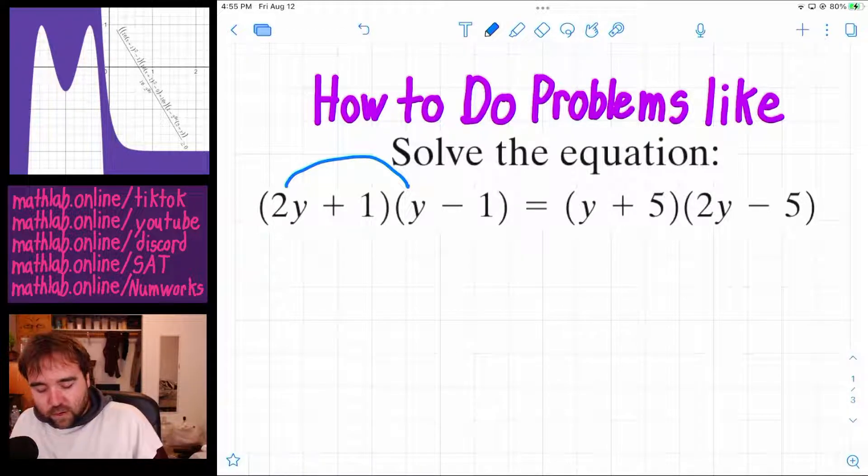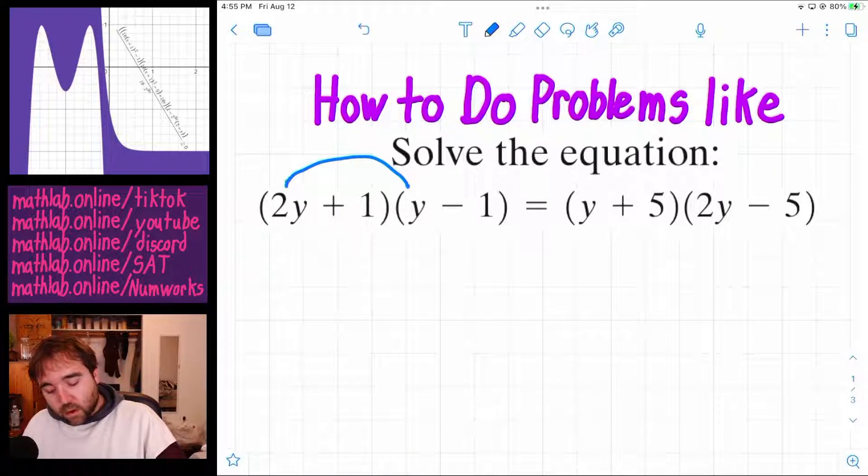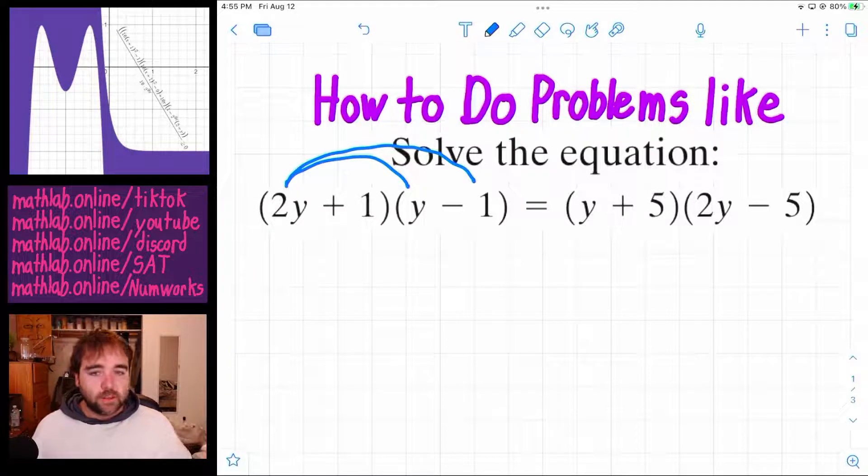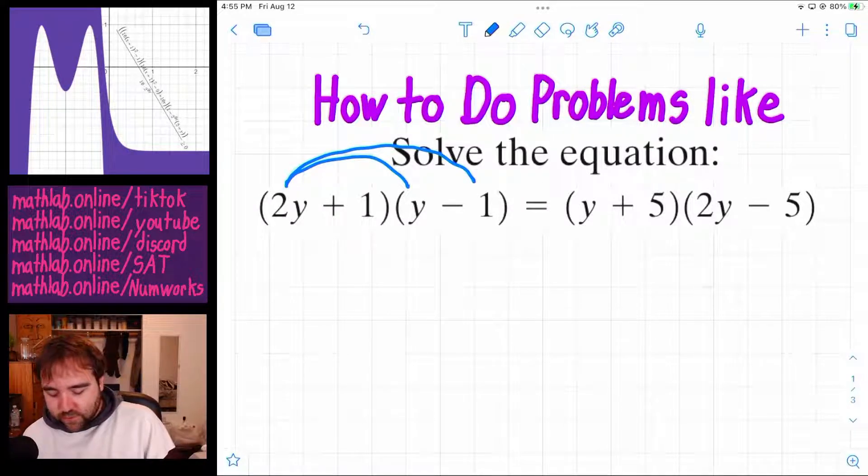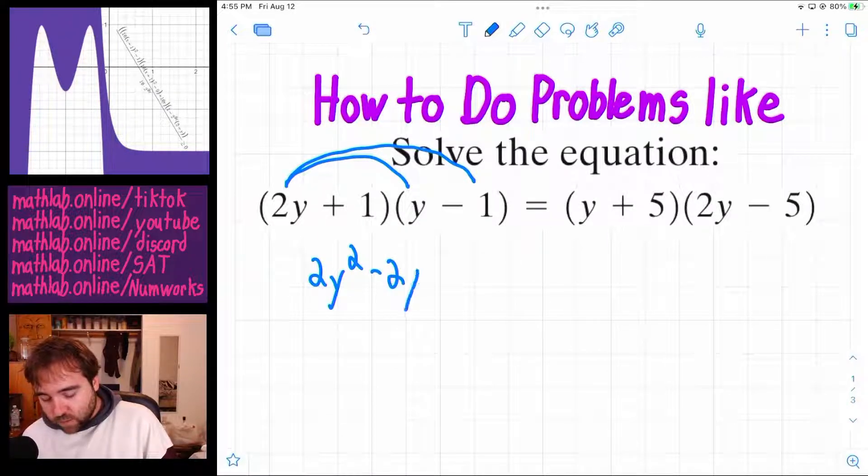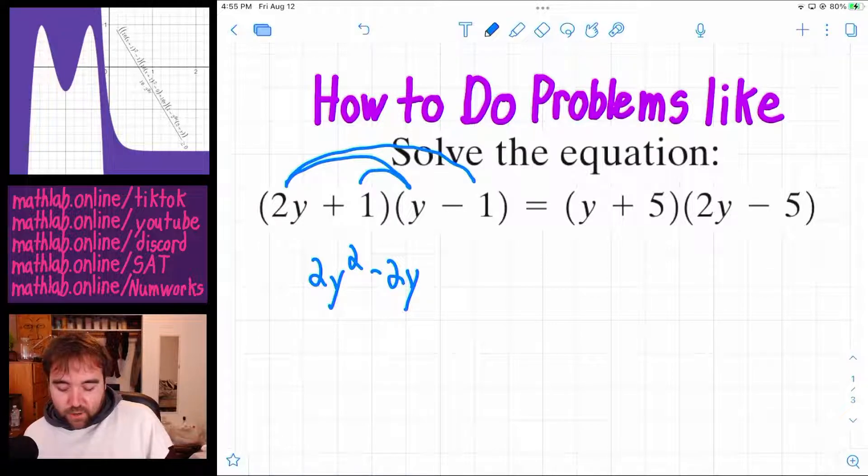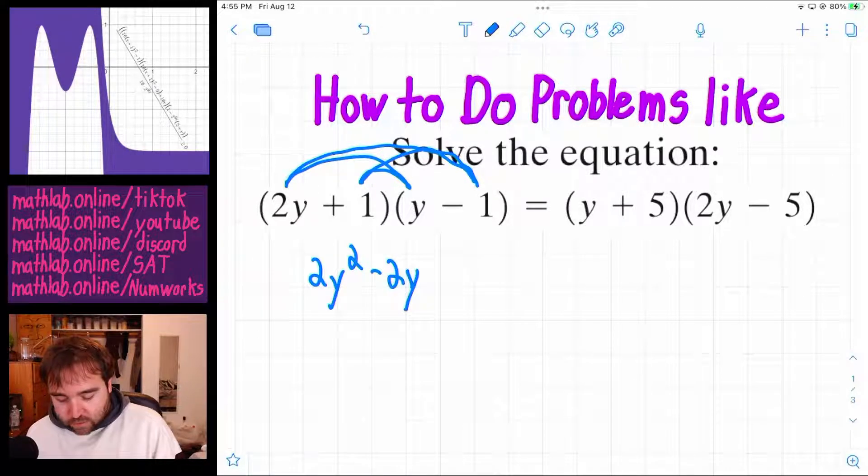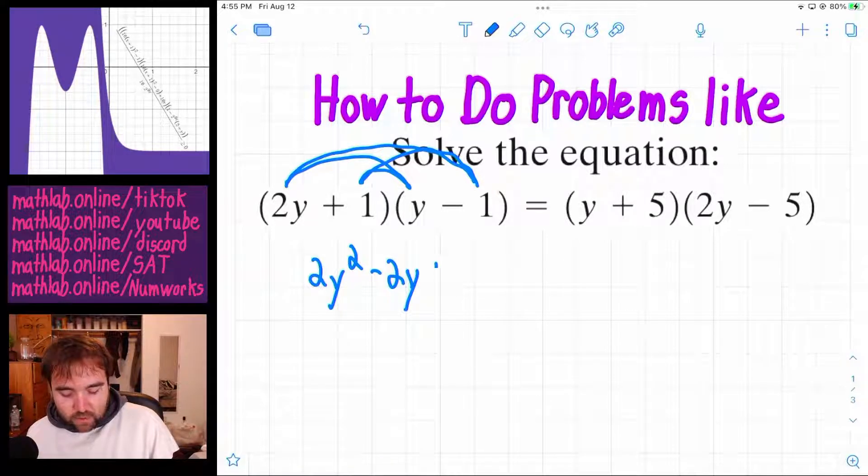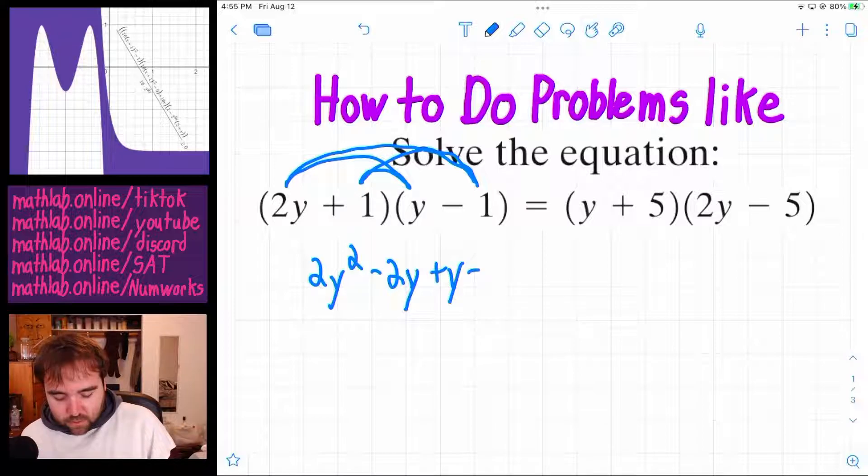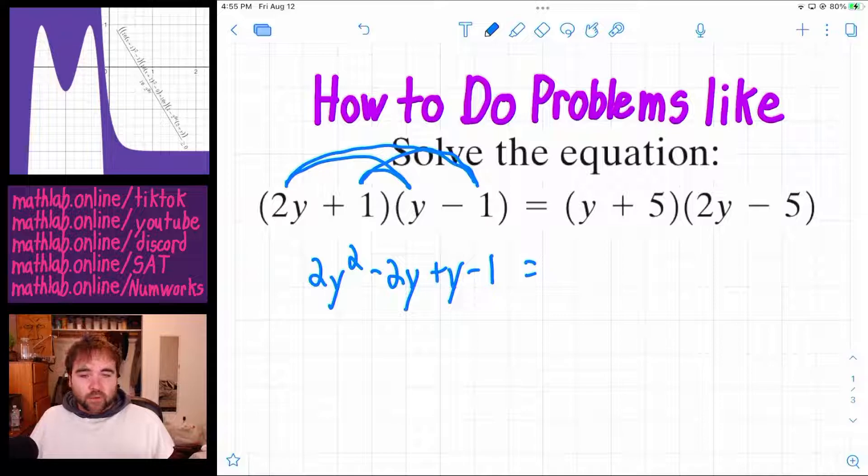So we're going to do the 2y times the y. We're also going to do the 2y times the negative 1. So that's going to be 2y squared minus 2y. And then we're going to do the 1 times the y and the 1 times the negative 1. So that's 1 times y, positive y, 1 times negative 1, minus 1.